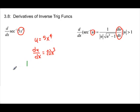1 over the absolute value of u, the absolute value of 5x to the 4th, times the square root of u squared minus 1, times the derivative.